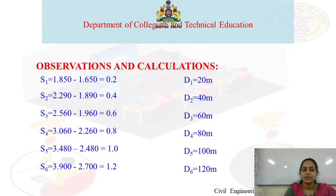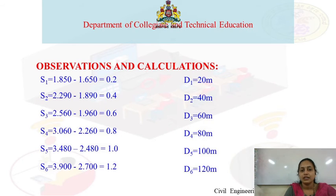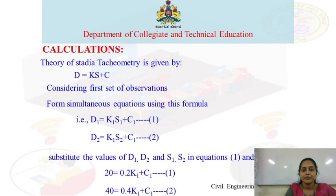The calculation steps are as follows: find S1 by top hair reading minus bottom hair reading to get the staff intercept. The distances are 20, 40, 60, 80, 100, and 120 meters. Calculate the staff intercept for each respective distance. Then use the formula D = KS + C.